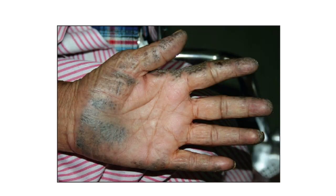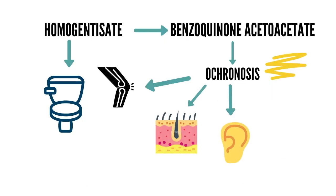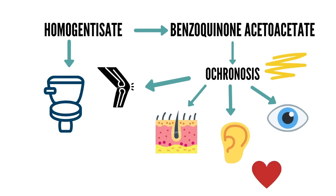When this pigment deposits in the dermis it leads to ochronosis — melanin-like pigmentation of the skin, seen from age 30 onwards. The cartilage of the ear develops grey or bluish-black discoloration and feels thick and inflexible. Pigment may also be seen in the buccal mucosa and nails. Brown or grey deposits appear in the sclera, typically midway between the medial canthus and the cornea. There may be dusky discoloration of the skin over the cheek, forehead, axilla, and genital region. Patients also develop calcification of coronary arteries and kidney stones.